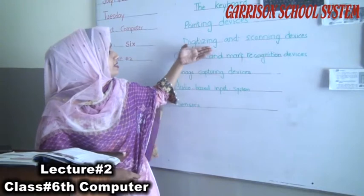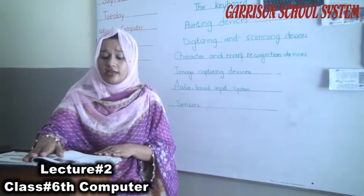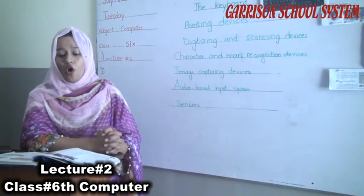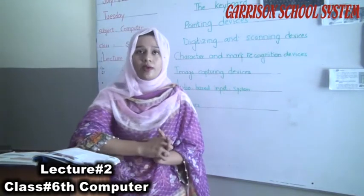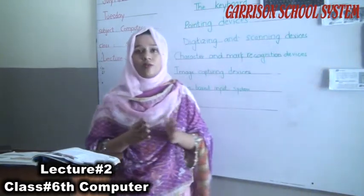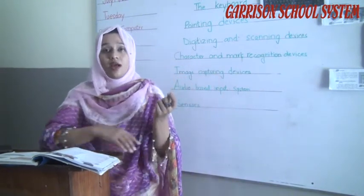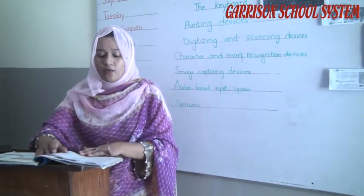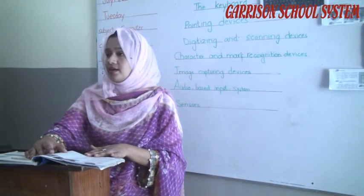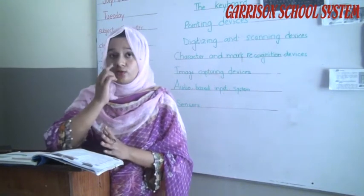The next type is digitizing and scanning devices. Today we can convert a manually produced document into digital format which can be stored and manipulated on the computer. These include the graphics tablet, optical scanner and card reader. A graphics tablet is covered with a touch surface and a stylus or puck, which is a mouse-like device, is used to draw directly on the tablet. Graphics tablets are used to make maps and drawings. The optical scanner converts printed or handwritten text, diagrams and photographs into digital form and transfers them directly to the computer.